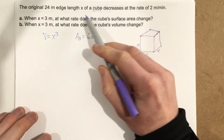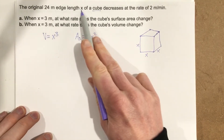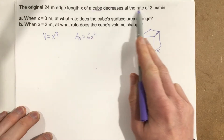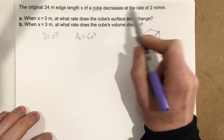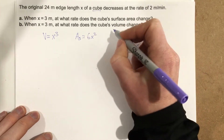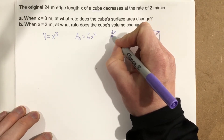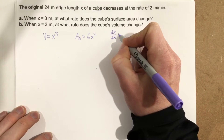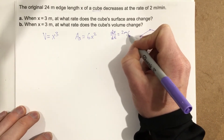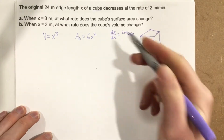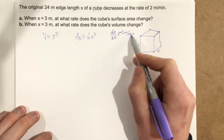They give us that the original 24 meter edge length X of a cube decreases at a rate of 2 meters per minute. So DX over DT is equal to negative 2 meters per minute, because it's decreasing.